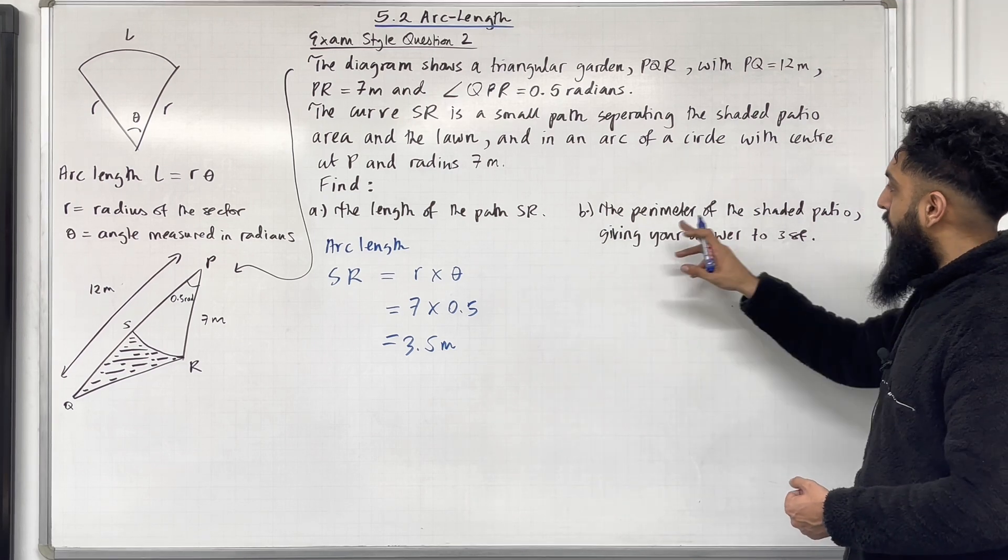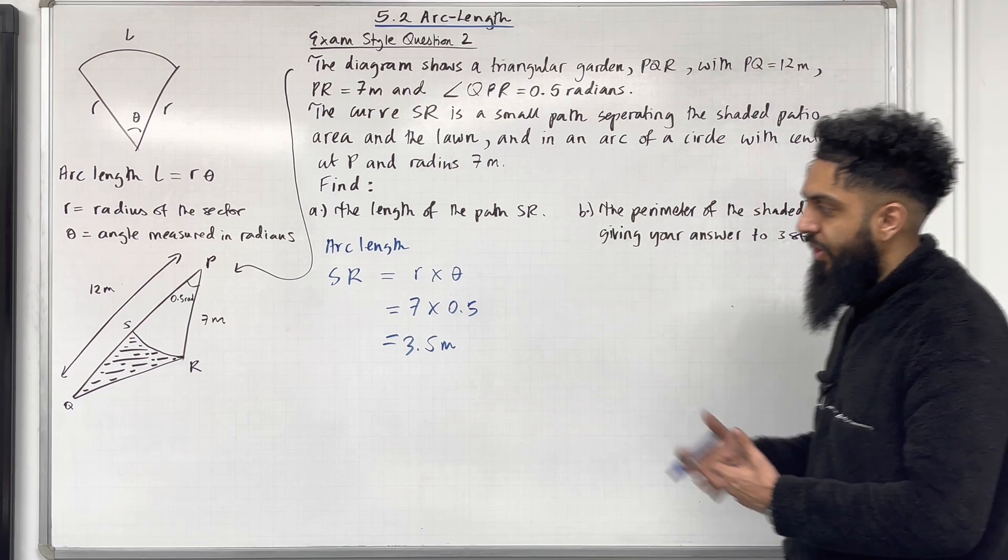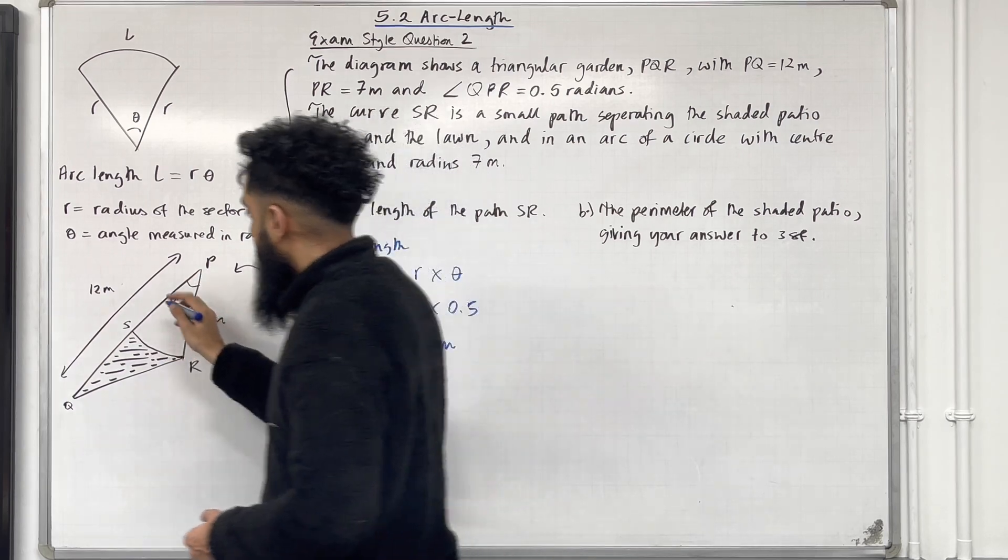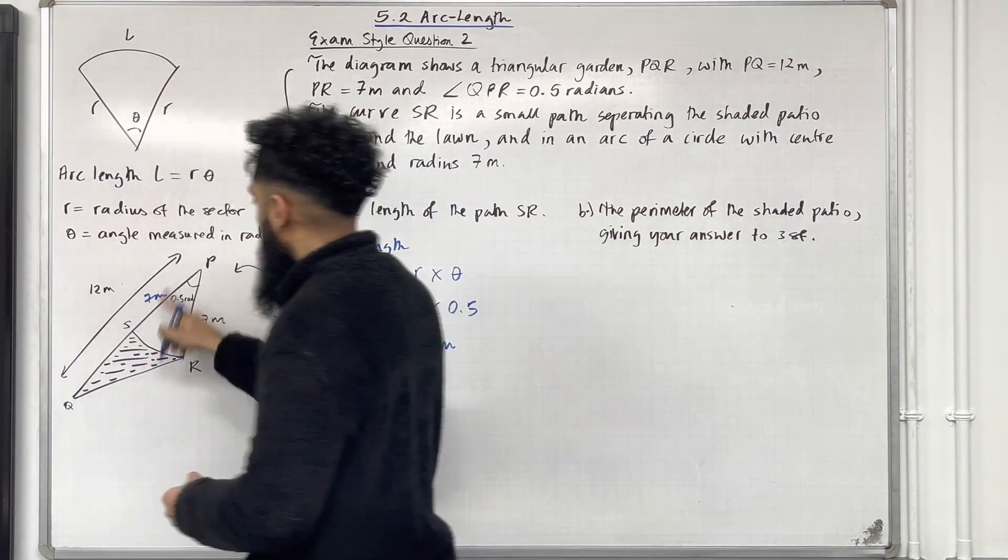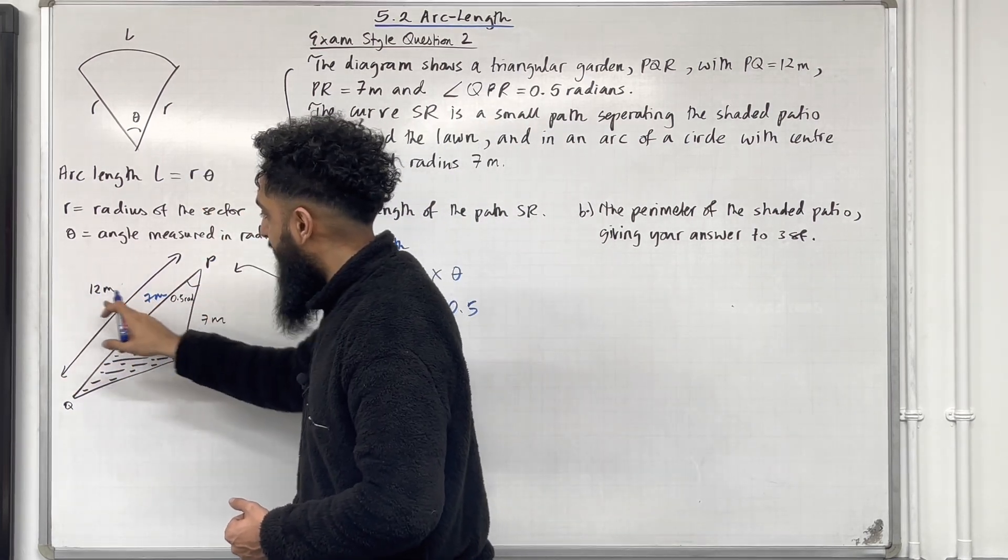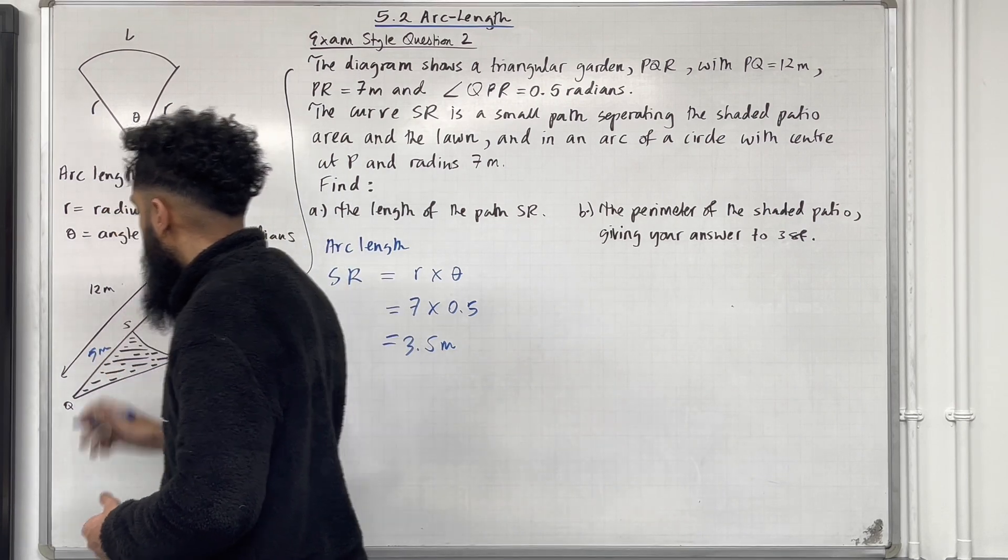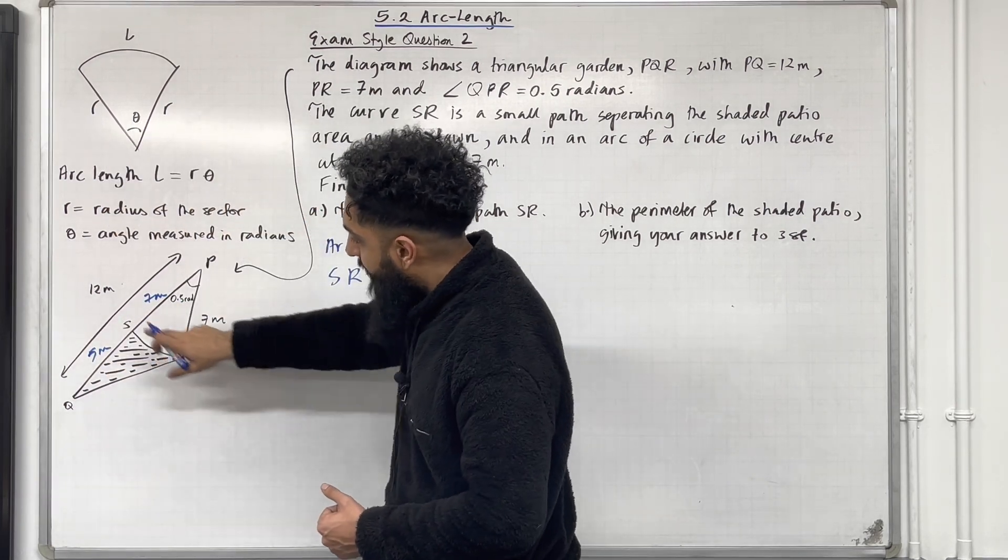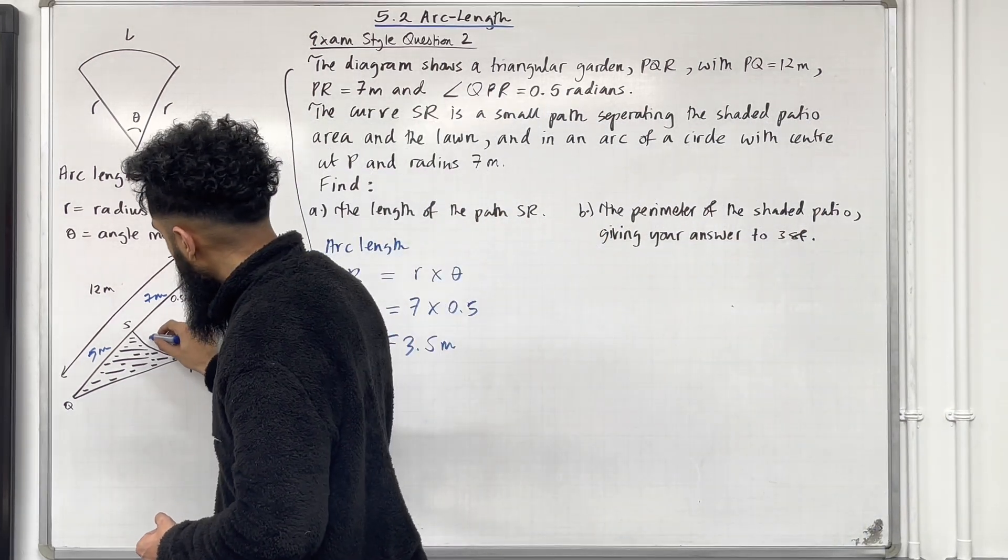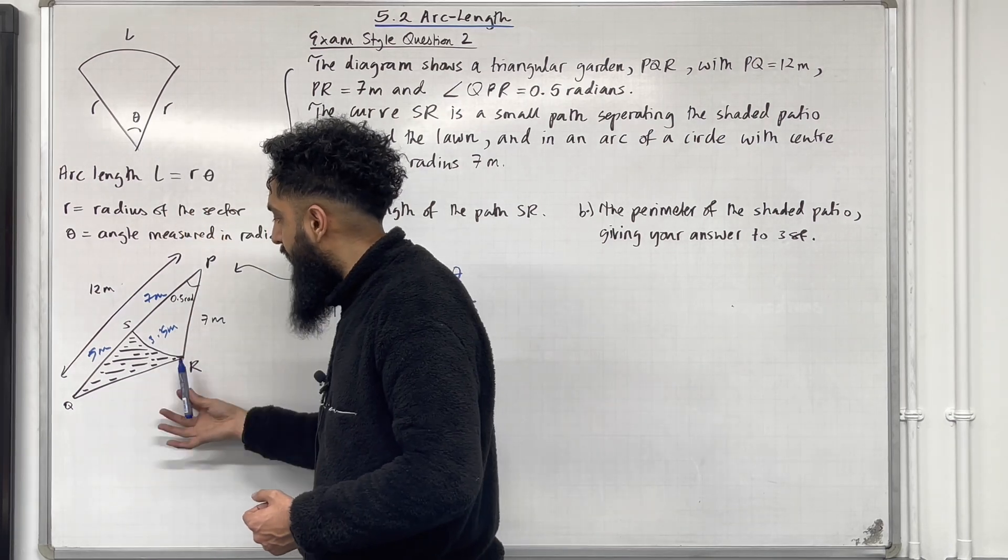Part B find the perimeter of the shaded patio giving your answer to three significant figures. So now we're looking at the shaded patio. This is 7 metre, this is also 7 metre because it represents the radius. If this is 12 metre and this is 7 metre we have 12 take away 7 metre which is 5 metre. Hence this part over here is 5 metre. That arc length SR was calculated in part A, it is 3.5 metre. So all that remains is to calculate the length of QR.